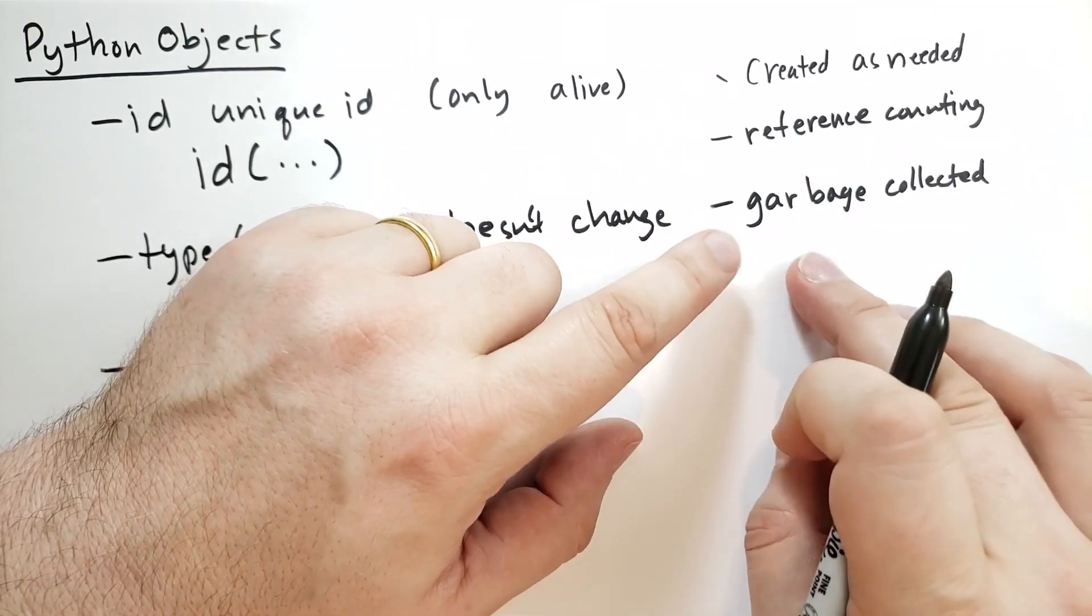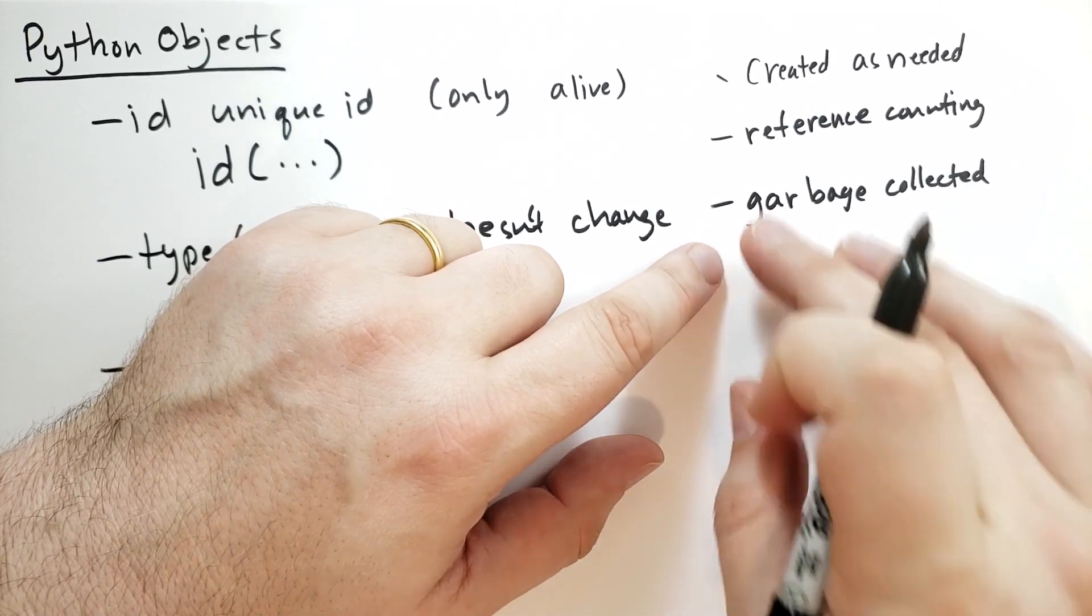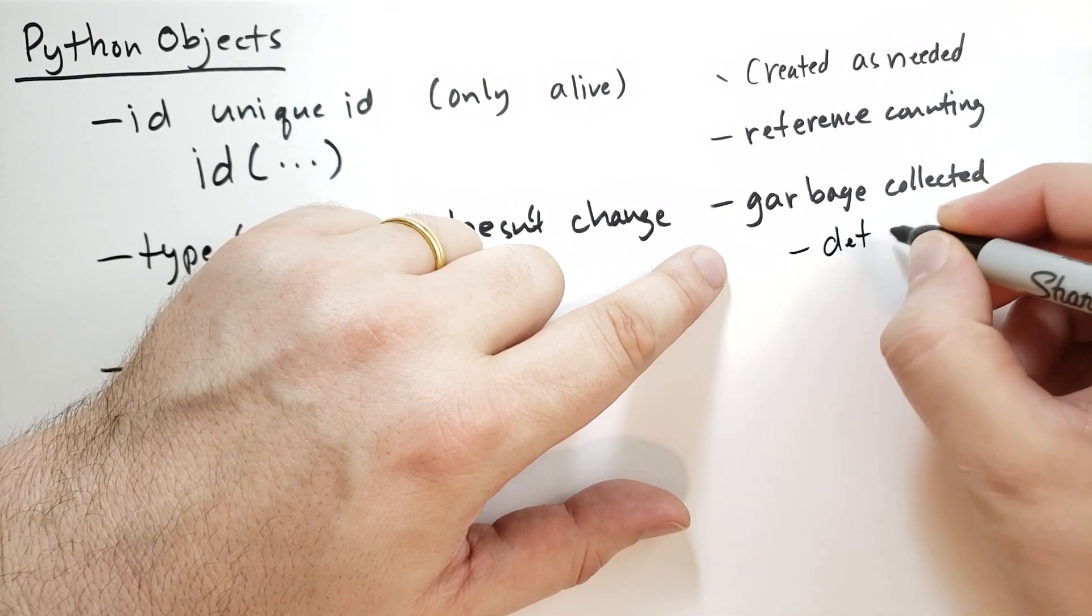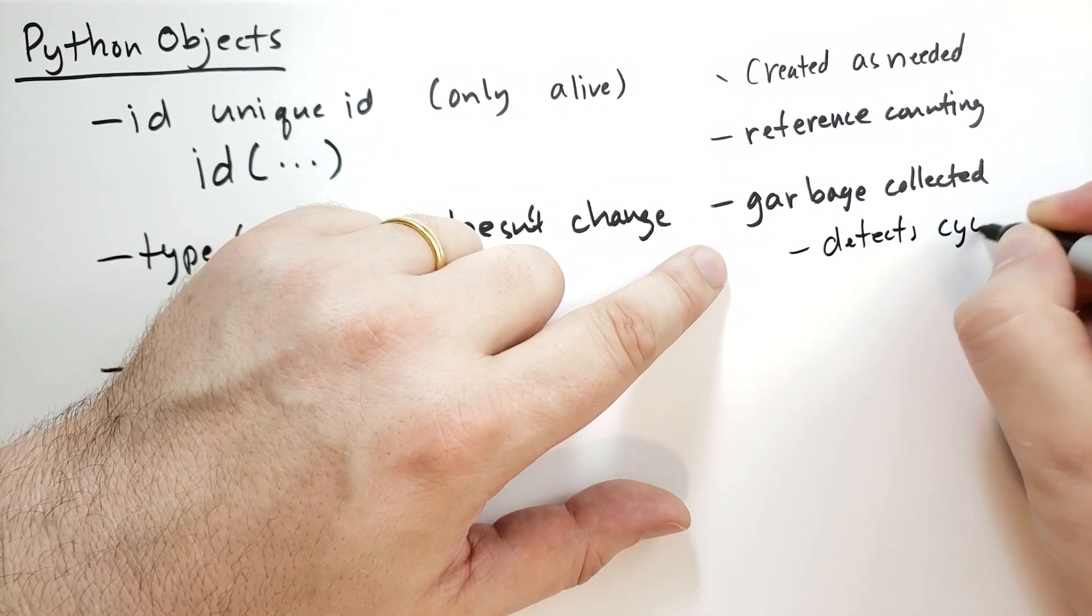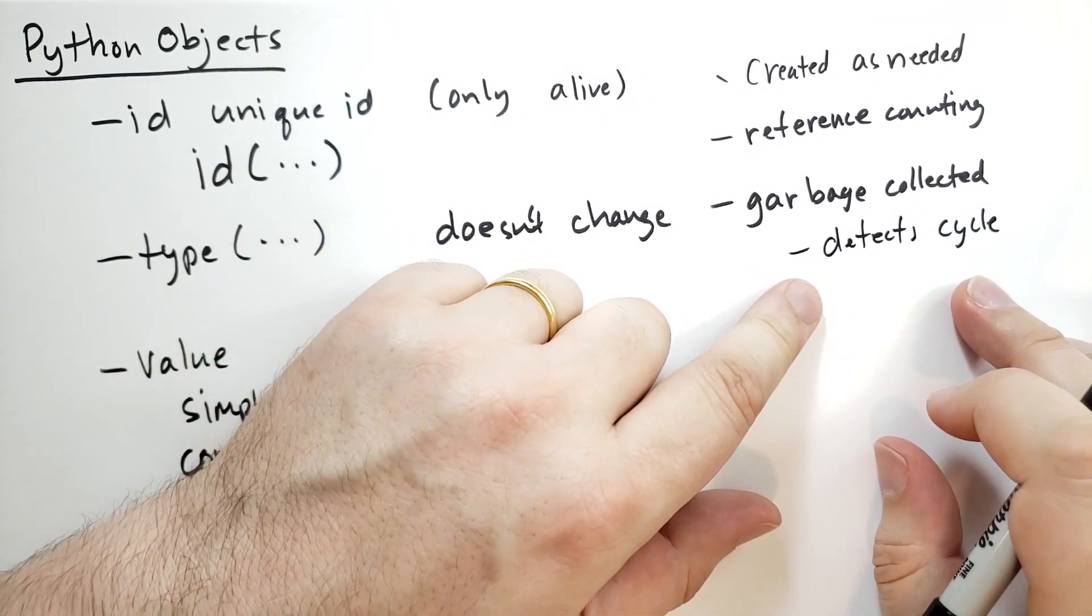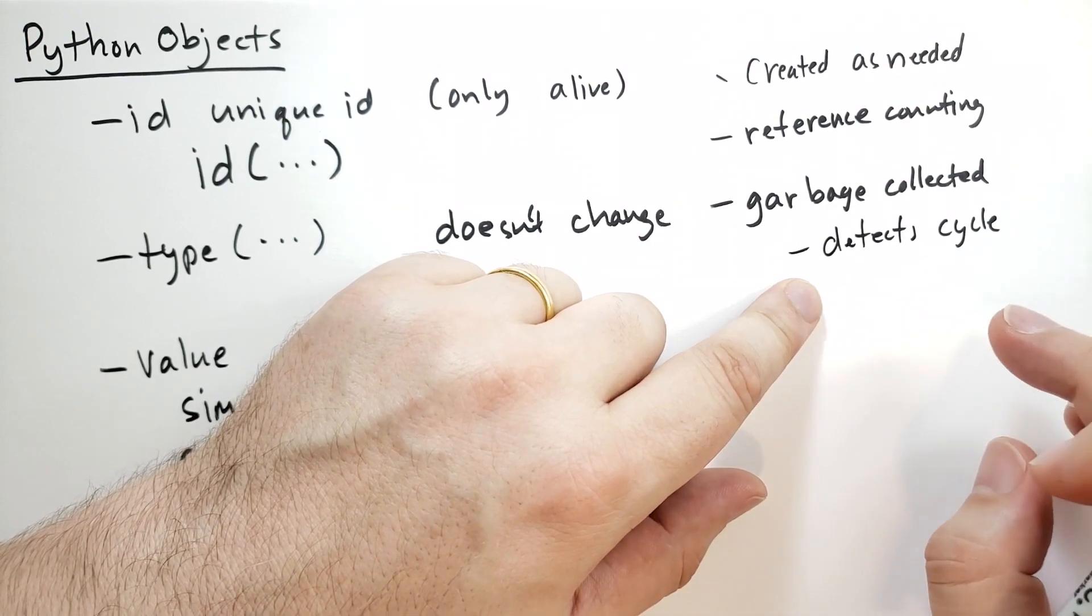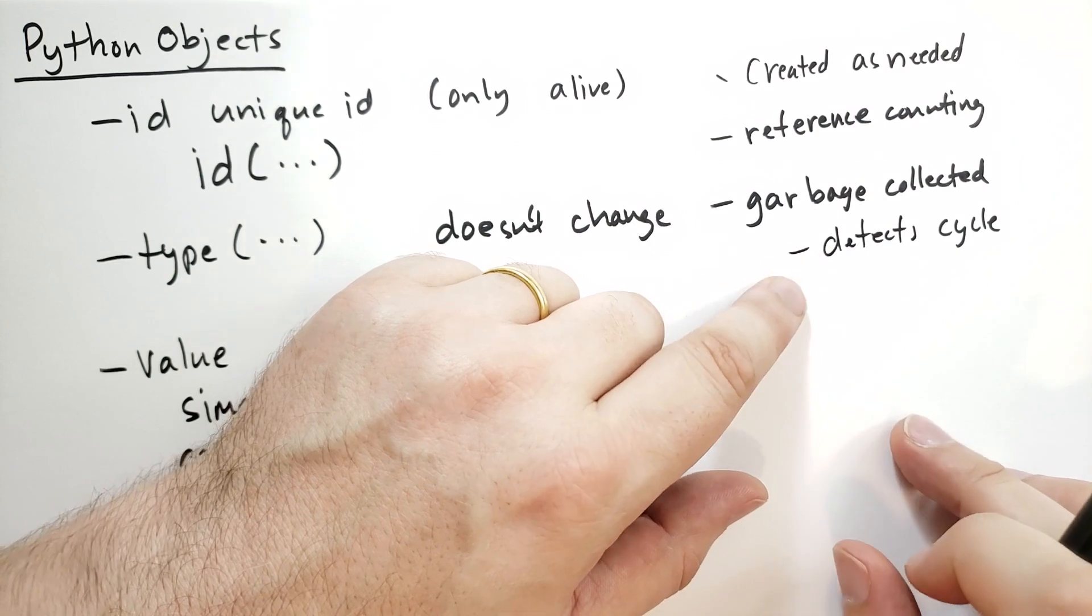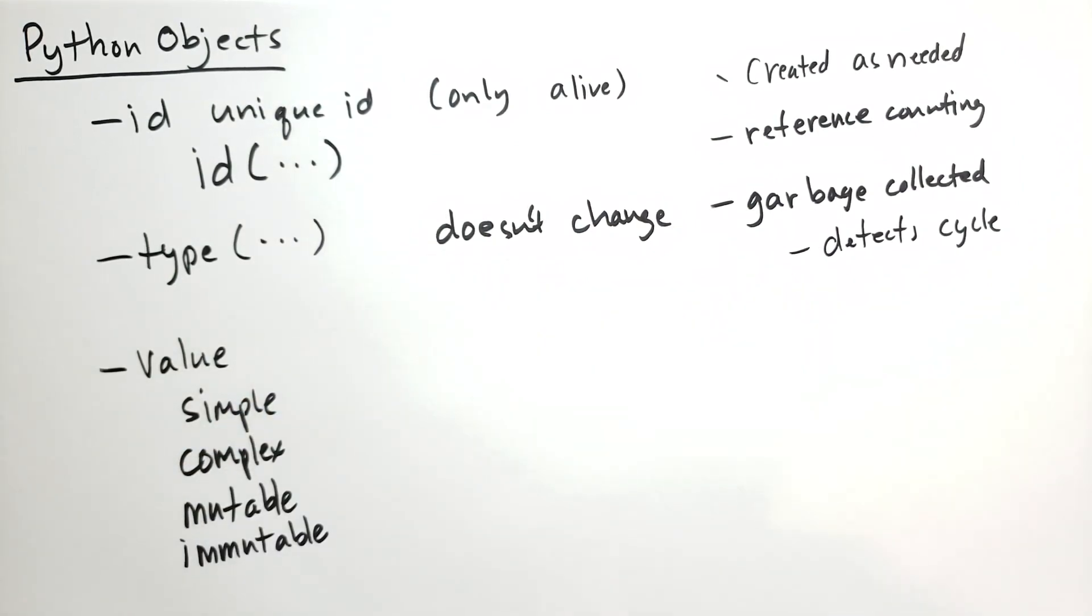But keep in mind, the garbage collection happens sometime after the last reference has been lost. And Python also detects cycles. What's a cycle? Well if an object references an object, and the other object references the first object, that's a cycle. And cycles can be arbitrarily large. Python does a pretty good job of finding these cycles and eliminating them.